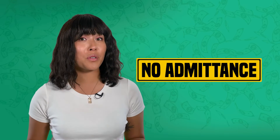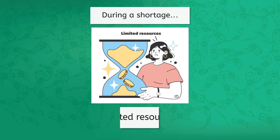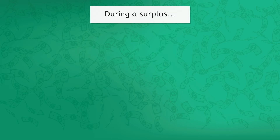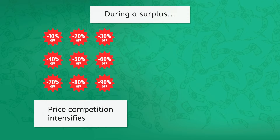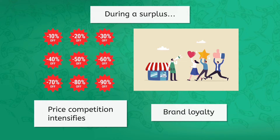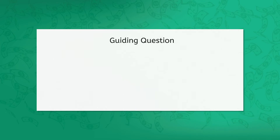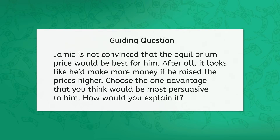When the market is out of balance, either with a shortage or surplus, it also becomes tough for new producers to enter. During a shortage, resources become limited, initial costs rise, and the market may already be crowded. On the other hand, during a surplus, price competition intensifies, existing customers remain loyal to their brands, and market demand may be insufficient for more products to enter the scene. So it's crucial for new entrants to carefully assess market conditions before diving in and facing these barriers head-on. Let's take a moment to review: Jamie is not convinced that the equilibrium price would be best for him — after all, it looks like he'd make more money if he raised the prices higher. Choose the one advantage that you think would be most persuasive to him. How would you explain it?